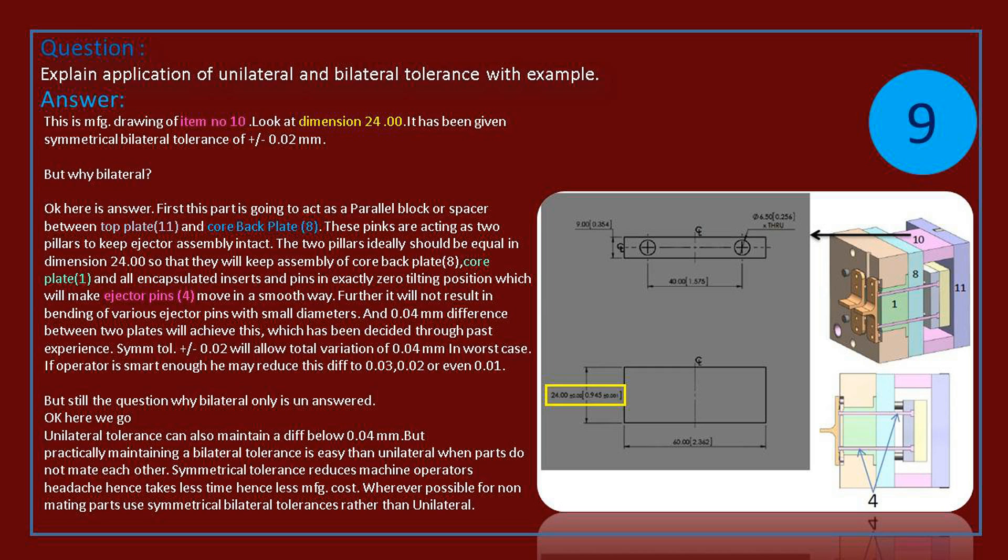But still the question why bilateral only is unanswered. Okay, here we go. Unilateral tolerance can also maintain a difference below 0.04 mm. But practically maintaining a bilateral tolerance is easy than unilateral when parts do not mate each other. Symmetrical tolerance reduces machine operator's headache, hence takes less time, hence less manufacturing cost.